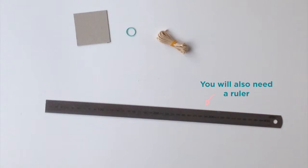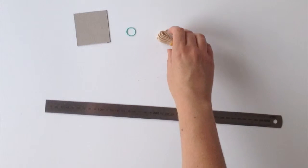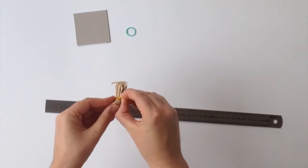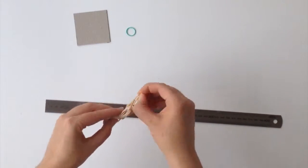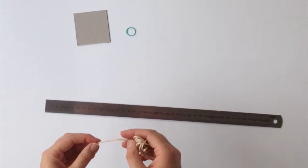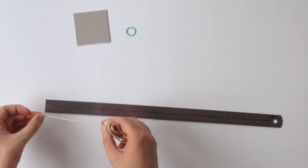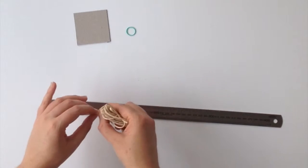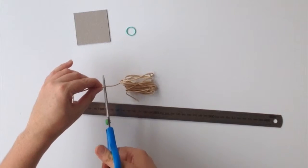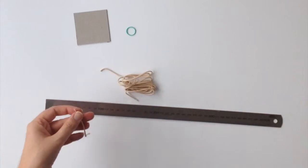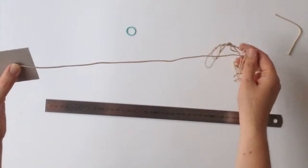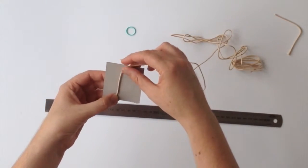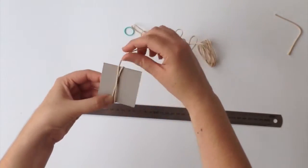So first what you do is cut 10cm off the colored rope and put that aside. Take your piece of cardboard and wrap the rest of this rope around it like this.